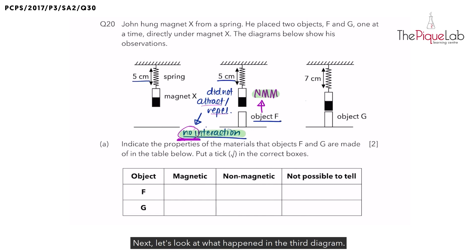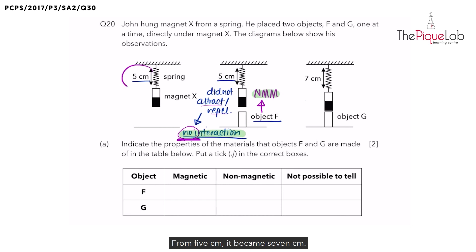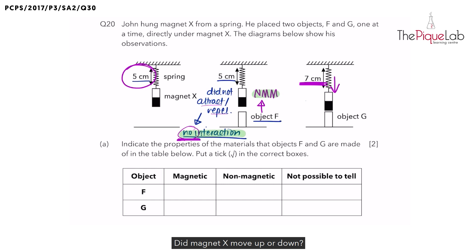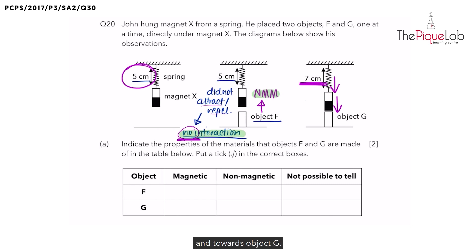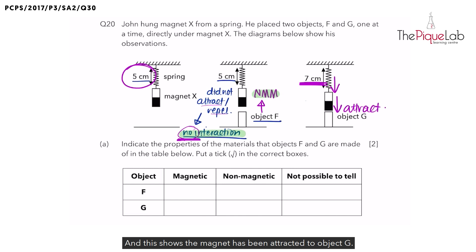Next, let's look at what happened when Object G was placed underneath Magnet X. Look at what happened to the spring — from 5 cm it became 7 cm, so the spring became longer. Why did it become longer? Magnet X would have moved downwards and towards Object G, which shows the magnet has been attracted to Object G.